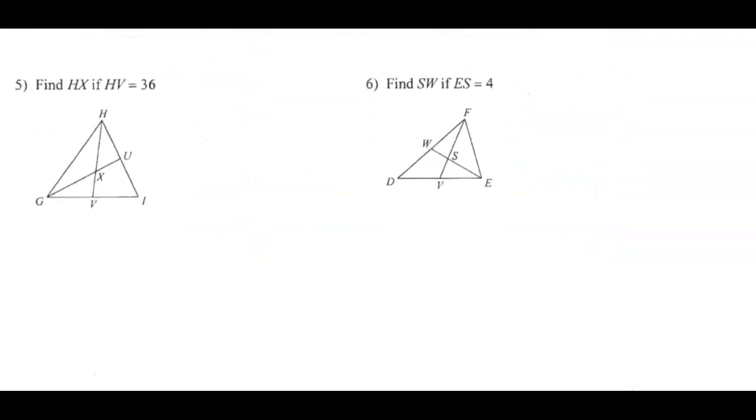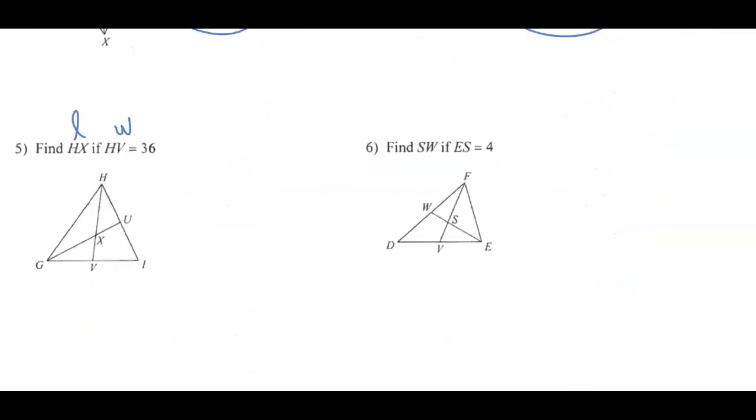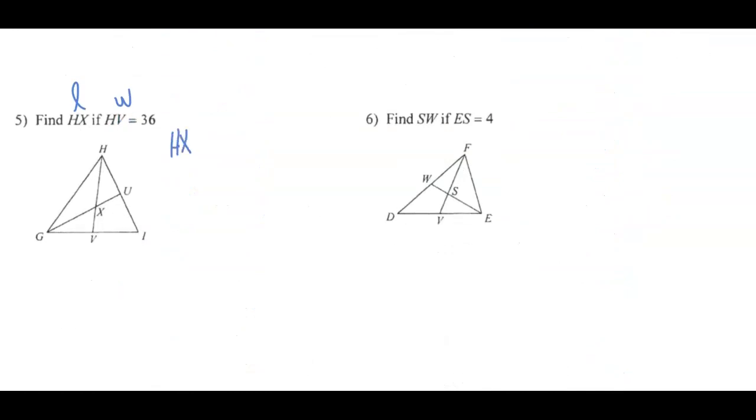Find HX if HV is thirty-six. HX is the long. HV is the whole. How do we find the long if we know the whole? The long is two-thirds of the whole. HX equals two-thirds of thirty-six. Three goes into itself once and into thirty-six twelve times. HX, two times twelve is twenty-four.